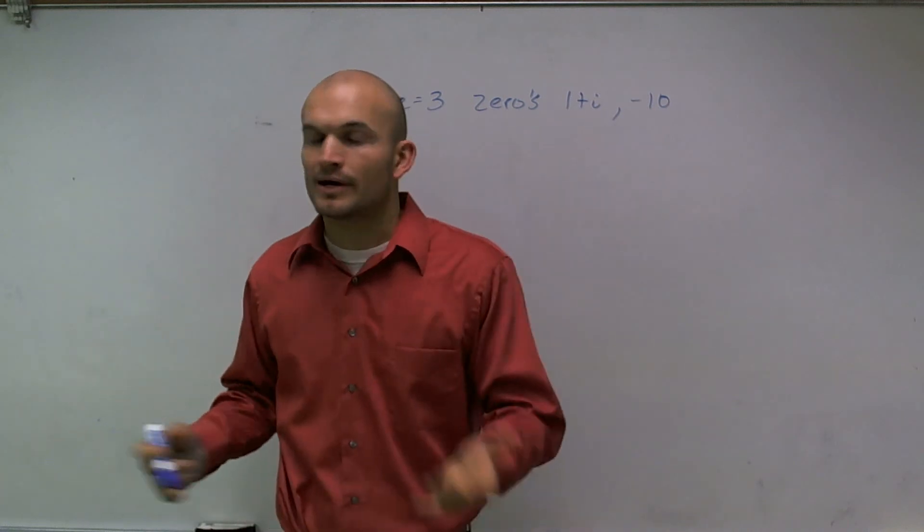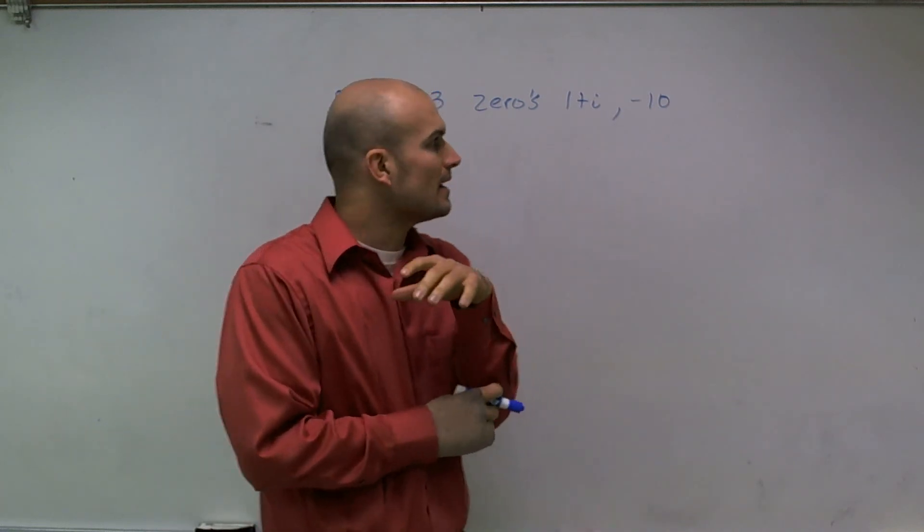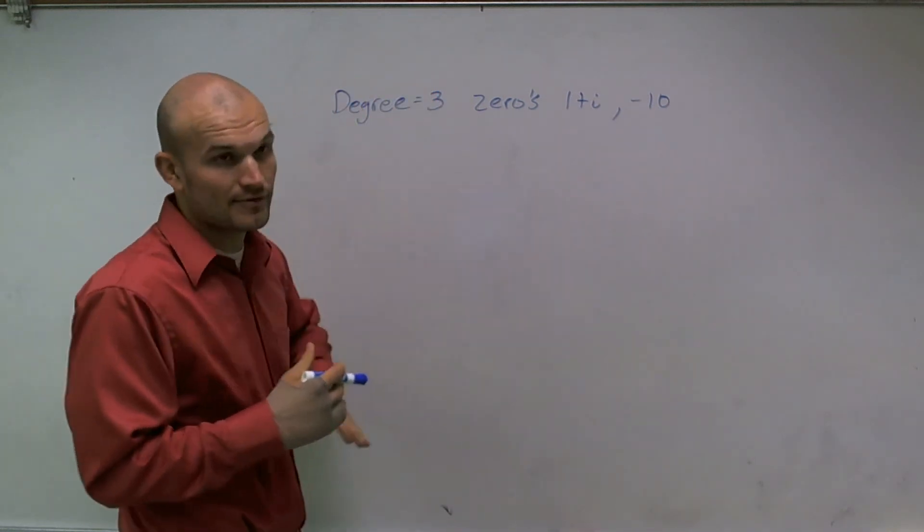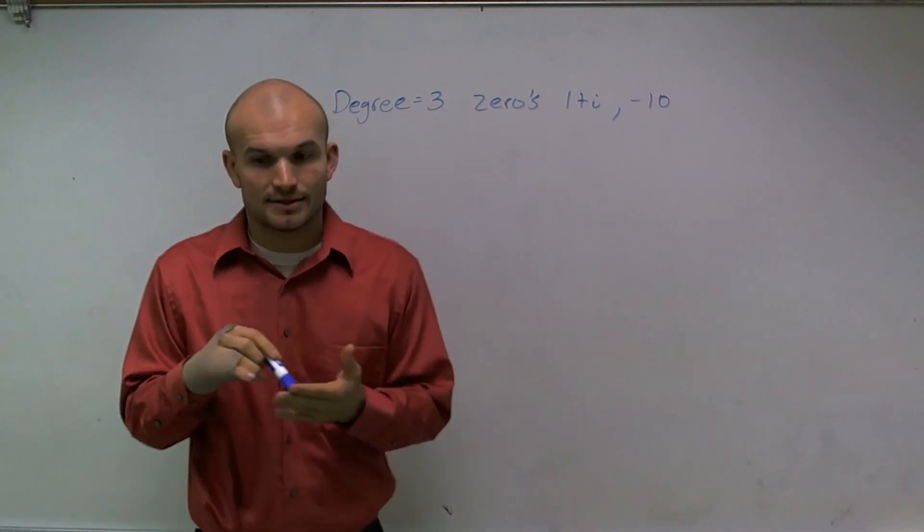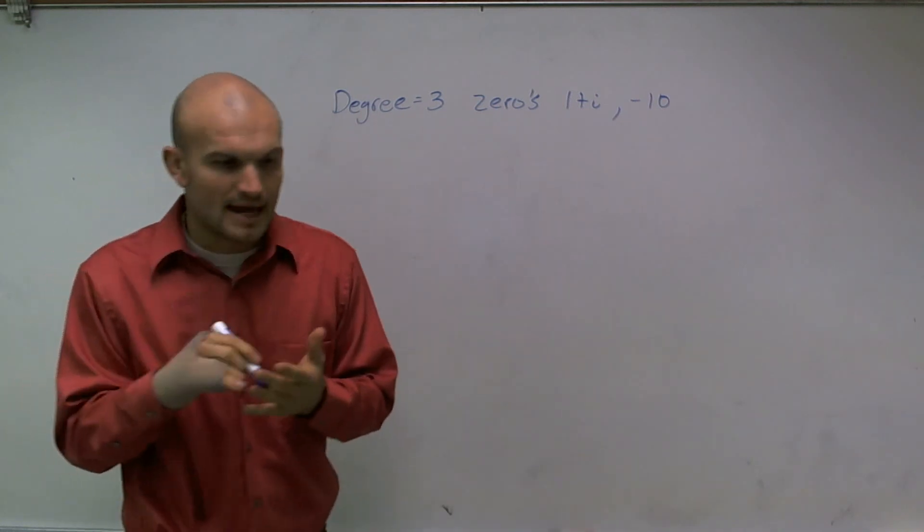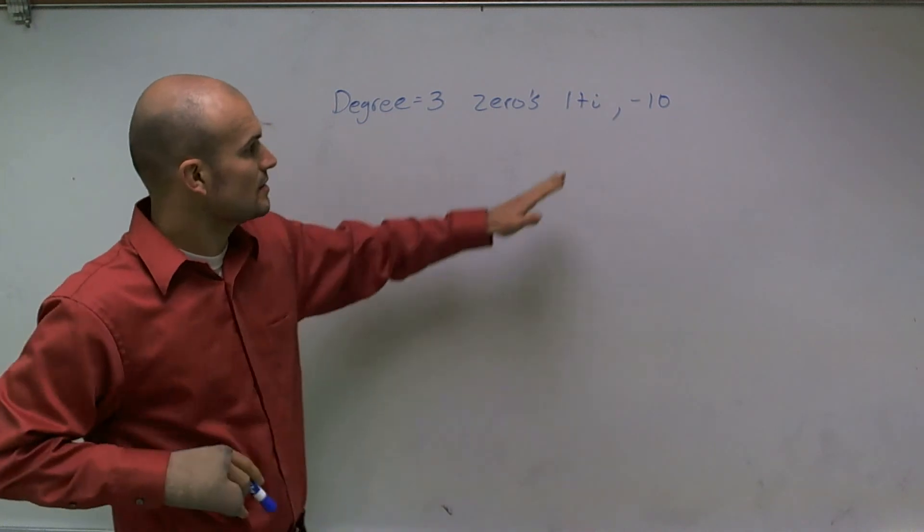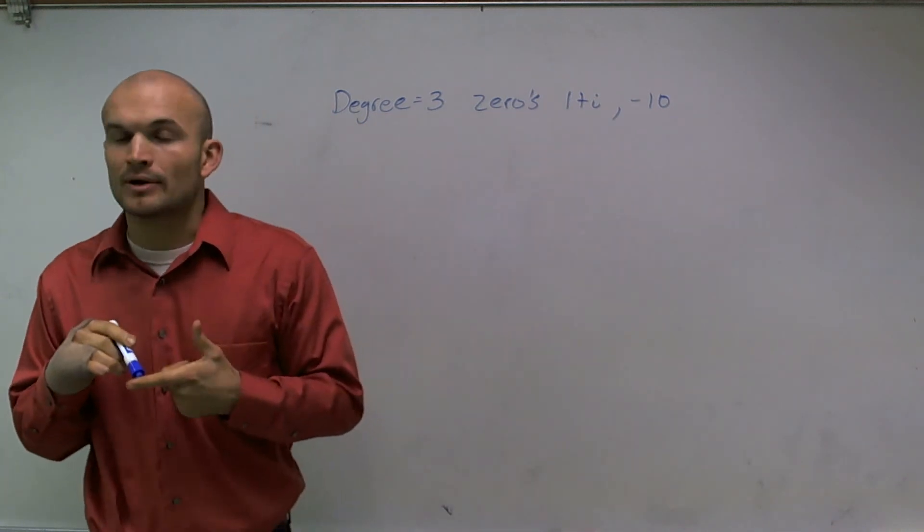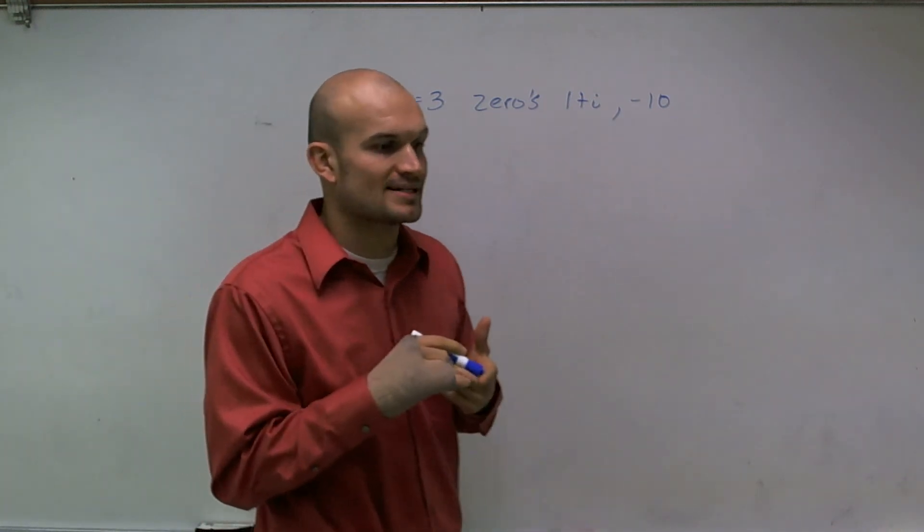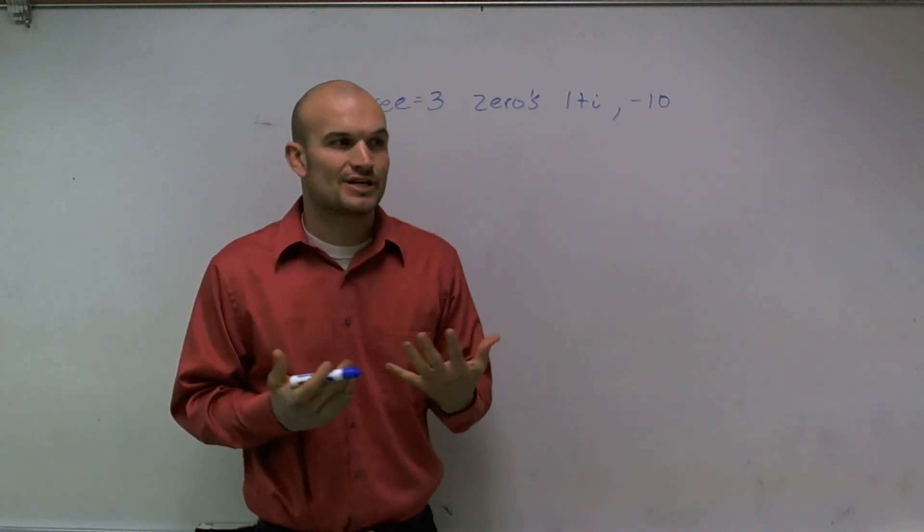So we want to find the polynomial, right? And when you want to find the polynomial of degree three, meaning there could be at most three different factors, one thing you need to remember whenever you're dealing with complex zeros is that we always include the conjugate.